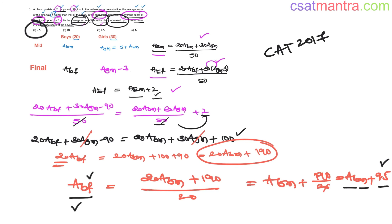Anyone who has a good understanding of the concepts and has done enough practice can solve this problem in less than 30 seconds. No matter which exam you are giving, if you stick to the concepts taught in our lectures, that's all you need. All I did here was make use of one concept, one formula — average equals sum of elements by number of elements. Just go sentence by sentence, assume what you don't know, write equations for each sentence, and solve them.